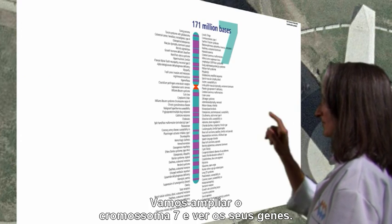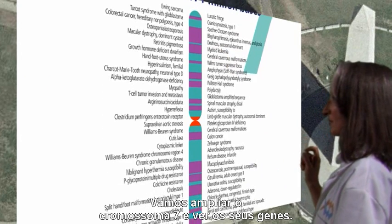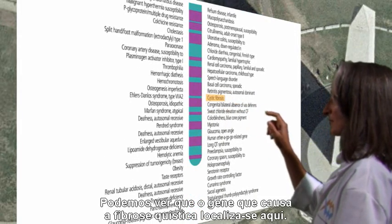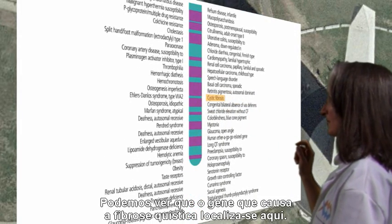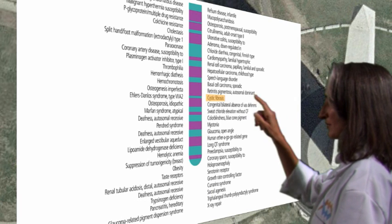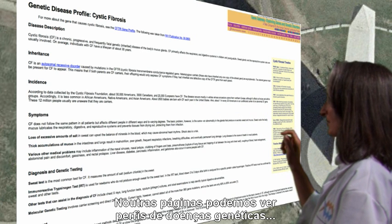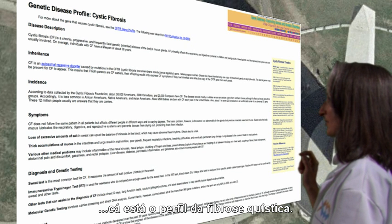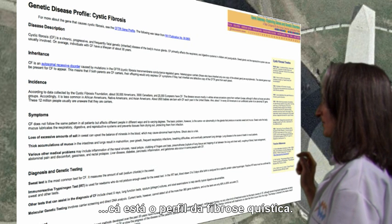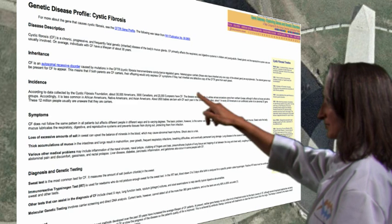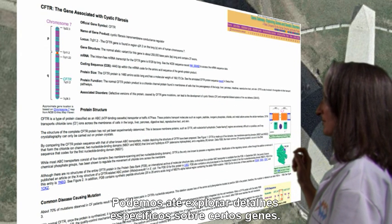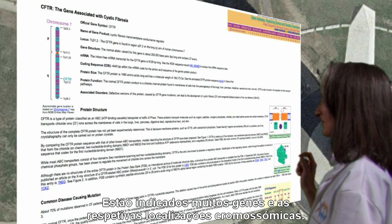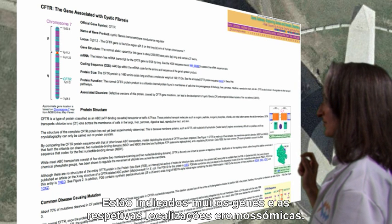Let's enlarge chromosome 7 and look at one gene thereon. As you can see, the gene that causes cystic fibrosis is here. On other pages you can see genetic disease profiles. Here is the cystic fibrosis profile. You can even examine specifics about some genes. Many genes and their location on each chromosome are listed.